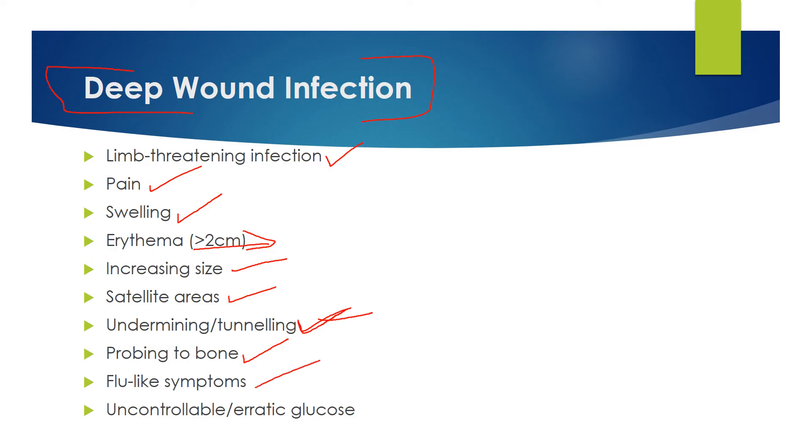Flu-like symptoms are also a sign of deep wound infections as well as uncontrollable or erratic glucose for the patient. It's important to remember to look at each patient individually. Sometimes patients, they're diabetics and they can't control their glucose very well. And sometimes it can be a sign of infection. So it's important to take everything into consideration.